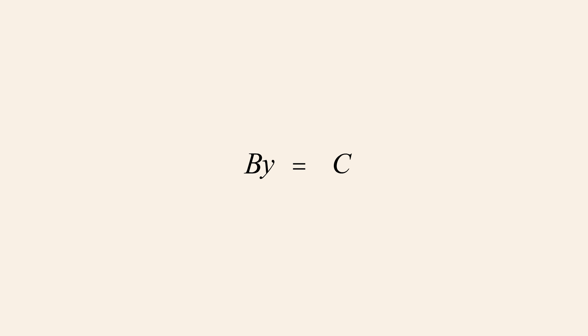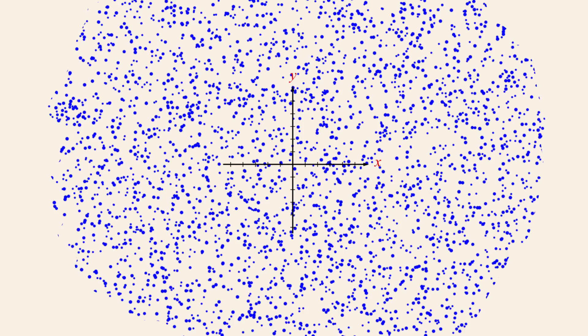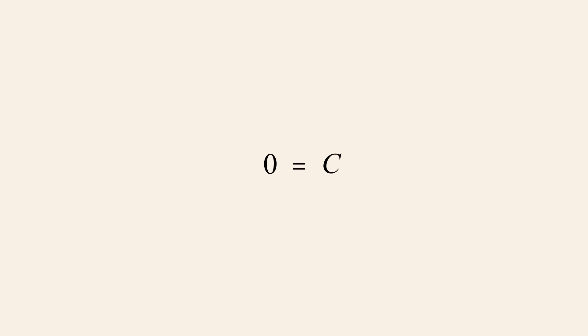Even though that variable is no longer included in the equation, it is understood that the variable still exists and is free to take on any value. This is why in a standard form linear equation a and b cannot both be zero, since this would eliminate both variables from the equation. If the constant c was zero, then x and y could take on any value and the statement would still be true — the solution set would contain every possible combination of x and y. And if the constant c was not zero, then no values of x and y would make the statement true and the solution set would be the empty set. Since in either case the graph of the solution set would not be a line, the equation zero equals c cannot be a linear equation.